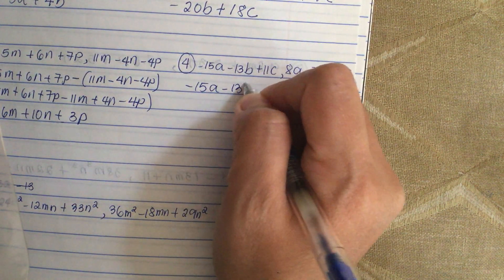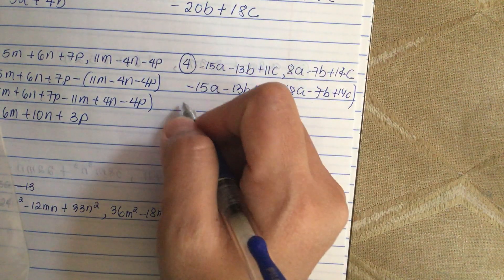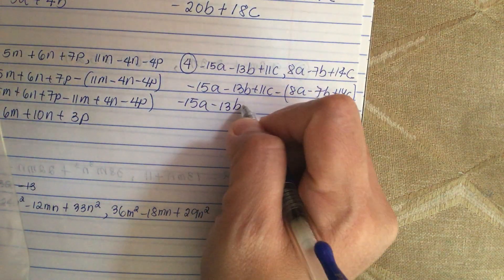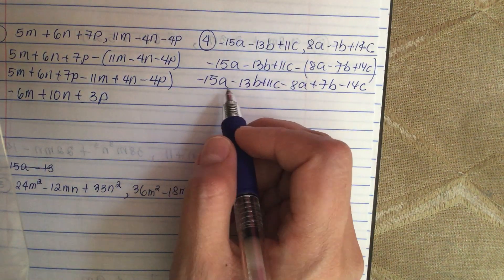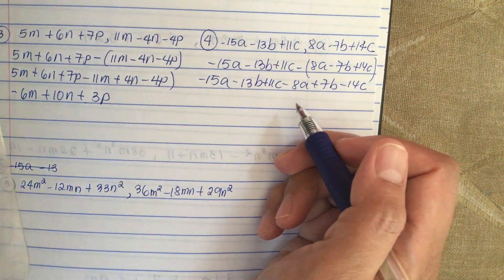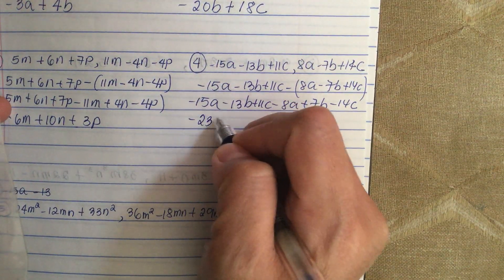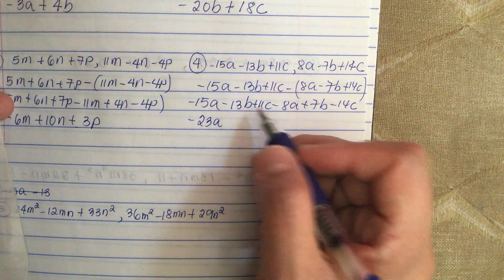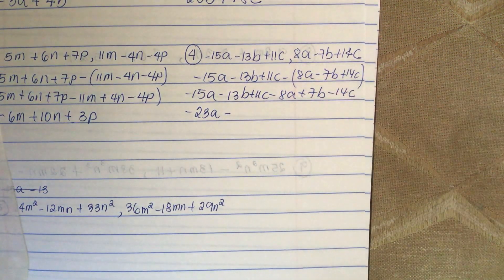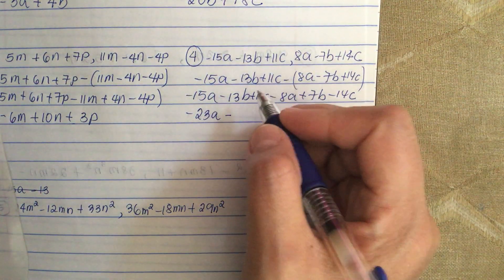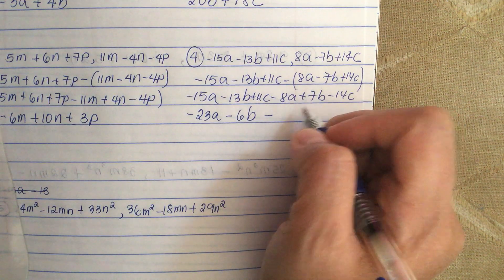Next problem: minus 15a minus 13b plus 11c, minus (8a minus 7b plus 14c). We distribute the minus sign and combine like terms: minus 15a minus 8a for a net of minus 23a. Then minus 13b plus 7b for a net of minus 6b. Then 11c minus 14c for a net of minus 3c.